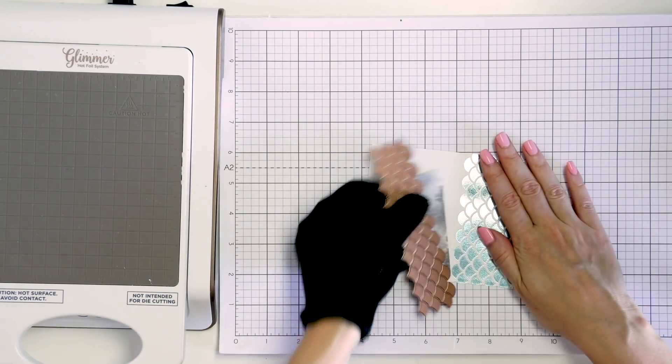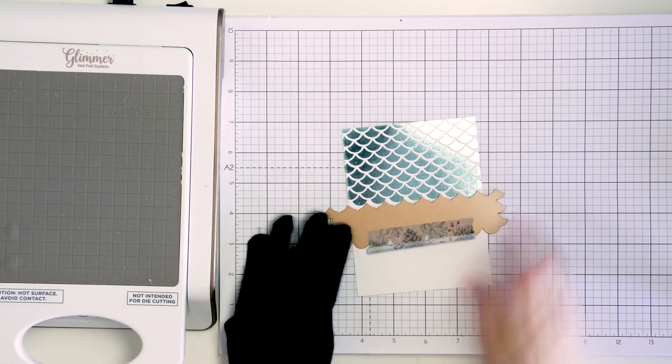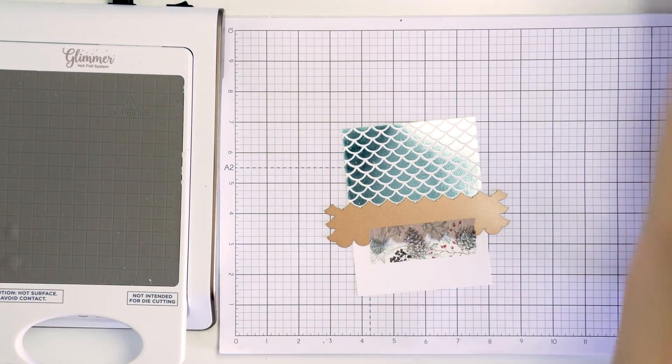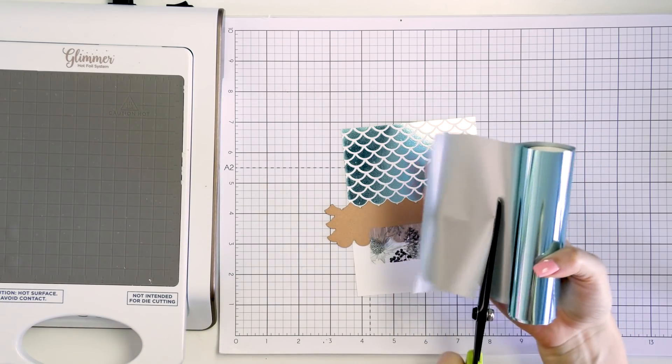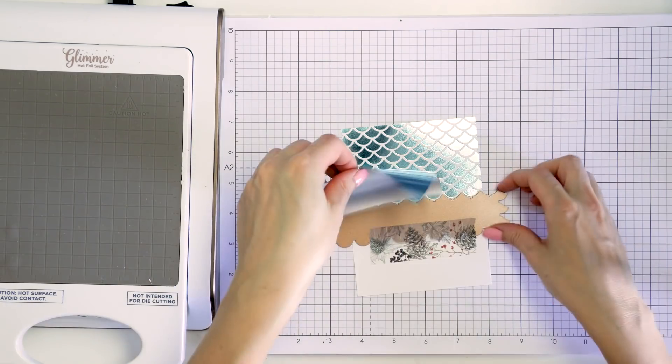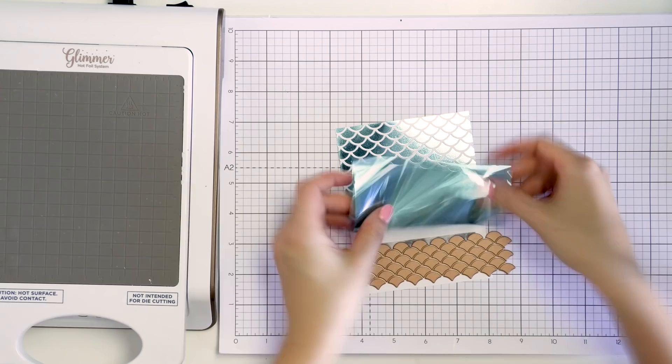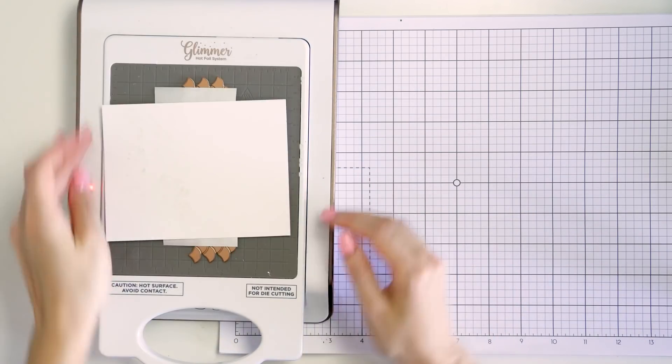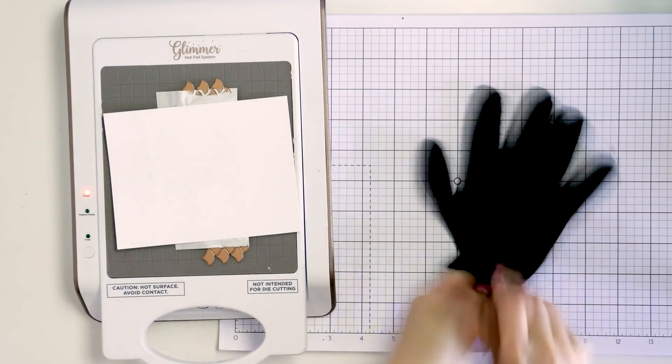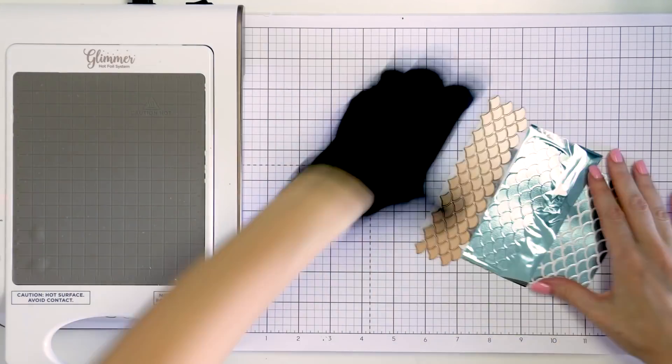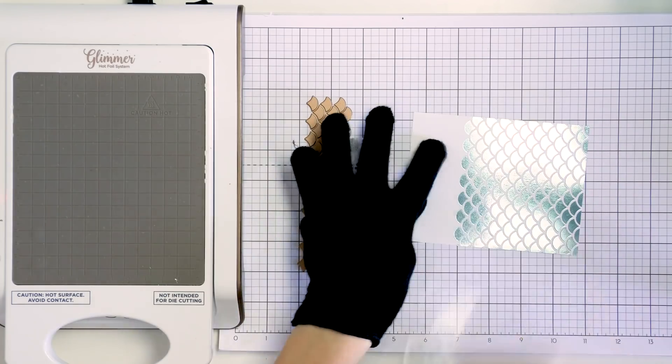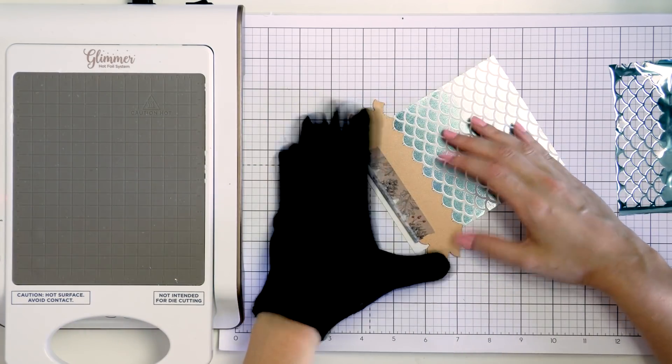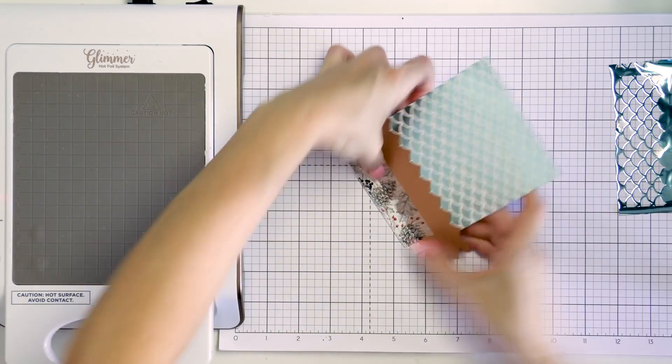To foil the entire card front using this glimmer plate you will need to foil it five times. I foiled mine four times as I knew I would be trimming the background down slightly so I didn't need to foil that fifth time to complete the background. If you do want to foil the entire card front I would recommend starting with a larger piece of paper. It's just easier this way to position the glimmer plate and then you can cut it down to the proper size once you're done foiling.